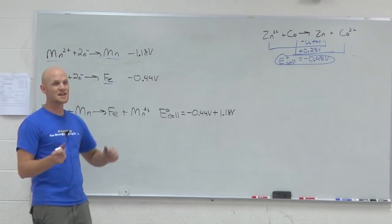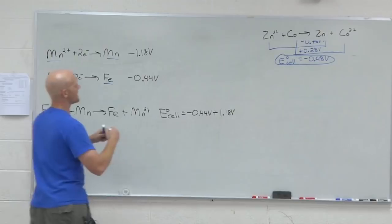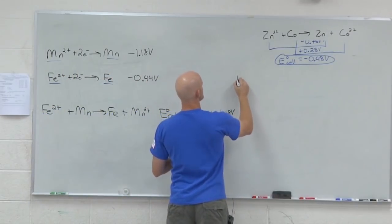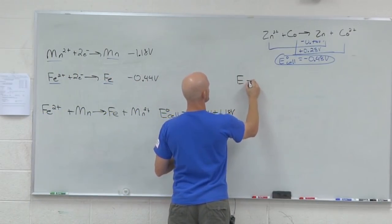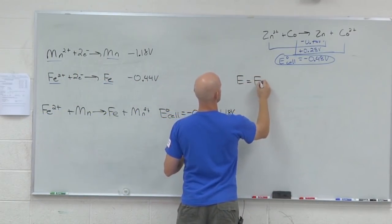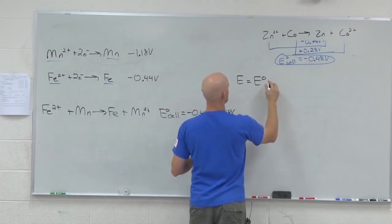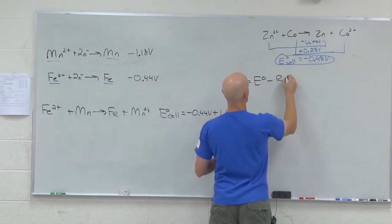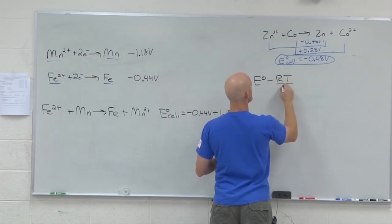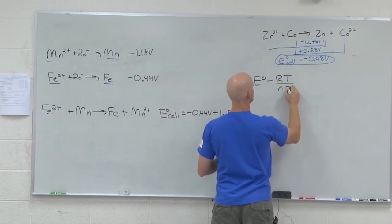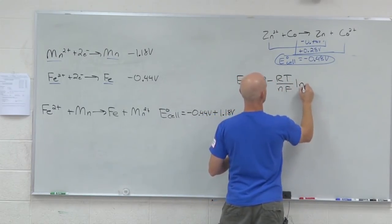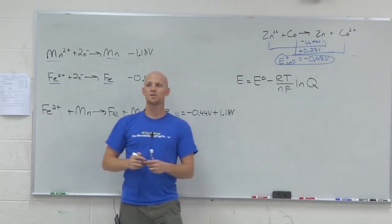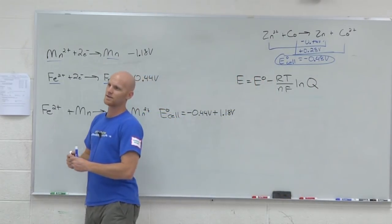We have the same thing here — we're going to have a fudge factor. The equation is called the Nernst equation, and it's E equals E standard minus RT over NF times the natural log of Q. It's called the Nernst equation.